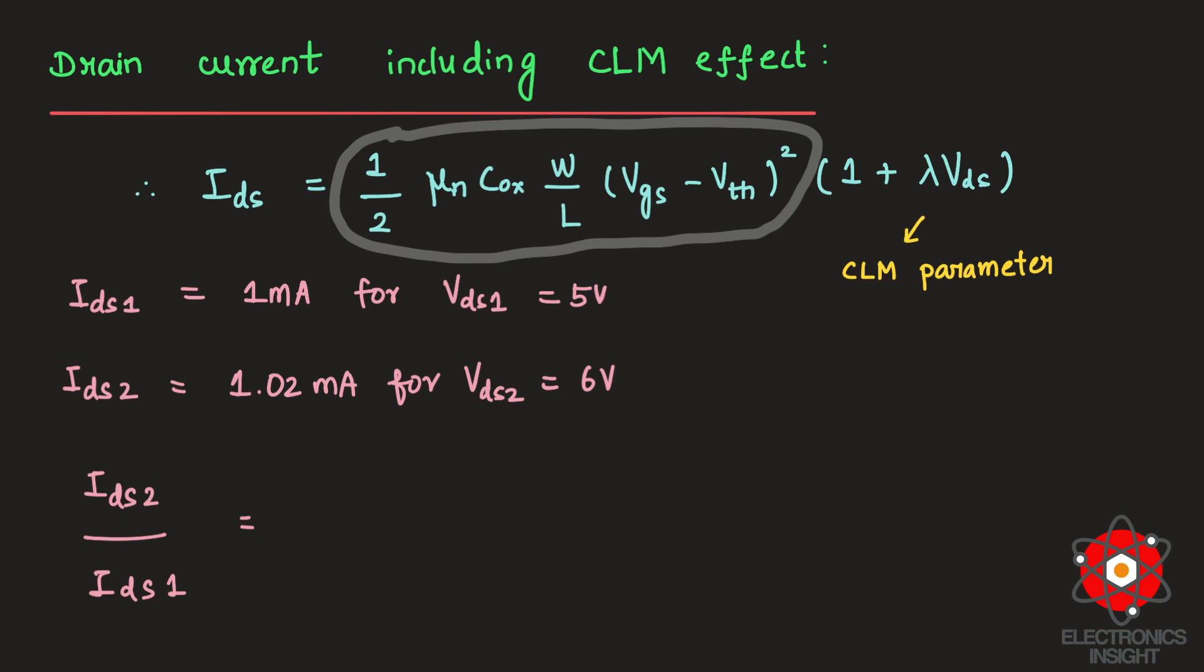We'll rewrite the equation as (1 + lambda × VDS2) divided by (1 + lambda × VDS1). Now just substitute the values: 1.02/1 equals (1 + 6λ)/(1 + 5λ).